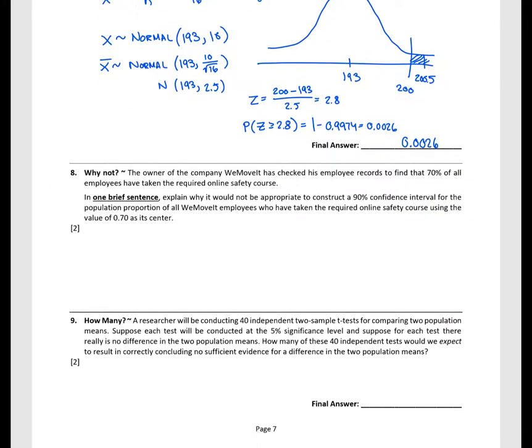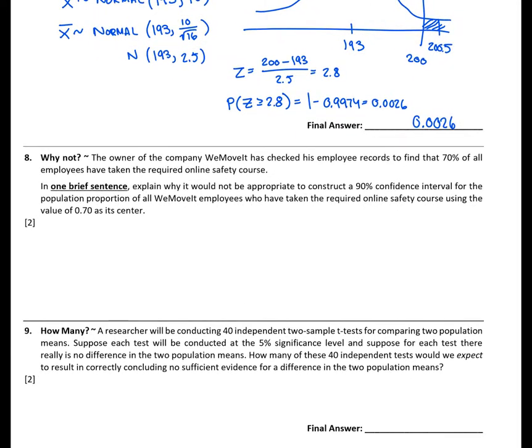For question 8, we have the owner of the company WeMoveIt has checked his employee records to find that 70% of all employees have taken the required online safety course. In one brief sentence, explain why it would not be appropriate to construct a 90% confidence interval for the population proportion of all WeMoveIt employees who have taken the required online safety course using the value of 0.7 as its center.